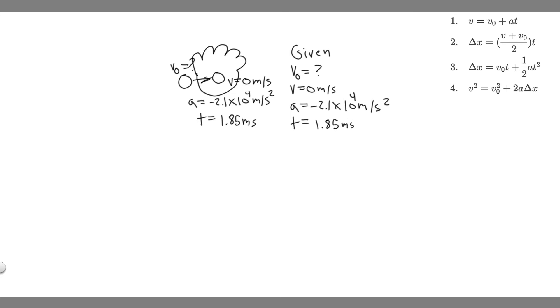If you look at the kinematic equations here, notice that if we use the first one, v equals v sub 0 plus a times t. If we plug in a, we plug in t, and we plug in 0, we can solve for v sub 0 because it's going to be the only variable left. But keep in mind, notice this is in seconds. These are in seconds, so this needs to be converted from milliseconds into seconds.